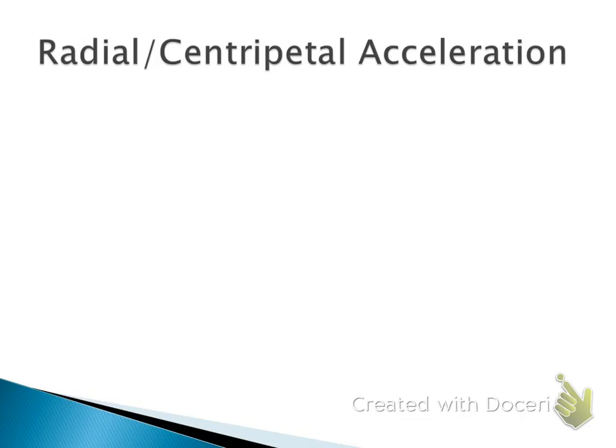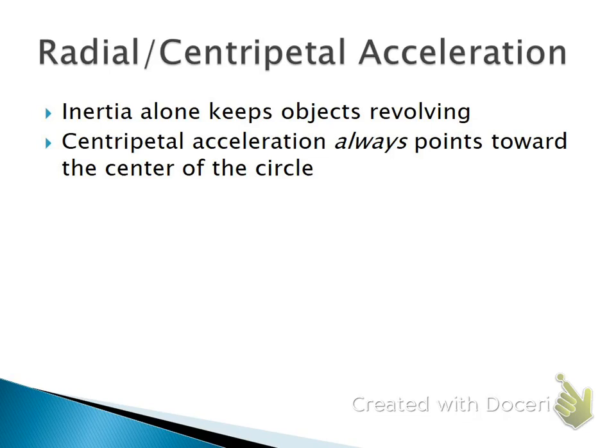Now, when I'm forcing something to travel in a circle, I need to be exerting a force on it. Nothing's going to travel in a circle unless there's a force causing that to happen. Think about Newton's first law. An object in motion stays in the same motion unless acted on by an outside force. Well, if I'm turning, that's not the same motion. There's got to be a force causing that. So Newton's first law is often called the law of inertia. Inertia is just an object's tendency to keep doing what it's already doing. So I've got to have some sort of force and some sort of acceleration. In this case, it's always going to point toward the center of the circle.